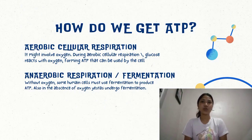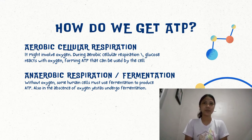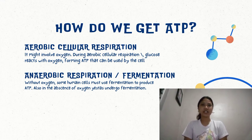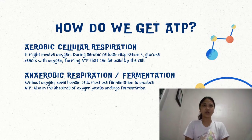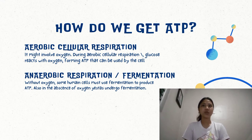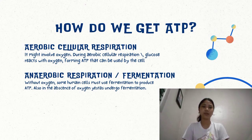How do we get ATP? We get ATP through aerobic cellular respiration and anaerobic respiration or fermentation. Aerobic cellular respiration involves oxygen — during it, glucose reacts with oxygen forming ATP that can be used by the cell. Anaerobic respiration or fermentation is without oxygen. Some human cells must use fermentation to produce ATP, and in the absence of oxygen, cells undergo fermentation.